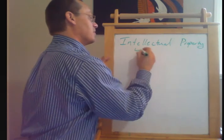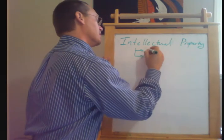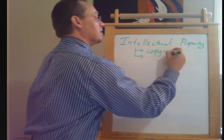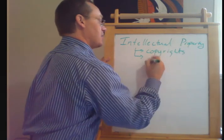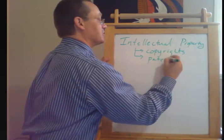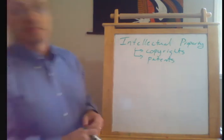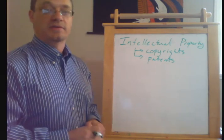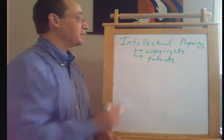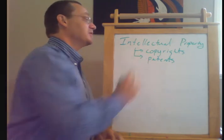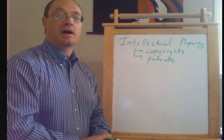So what we're talking about here is mainly copyrights and patents. Trademarks are also a type of intellectual property, but they're not that important to the concept of monopoly. So these two types of intellectual property, copyrights and patents,